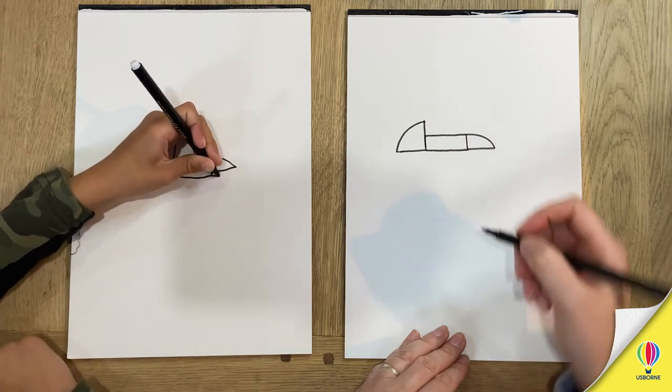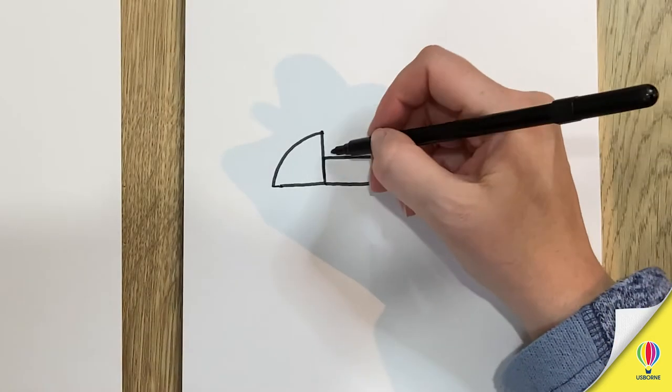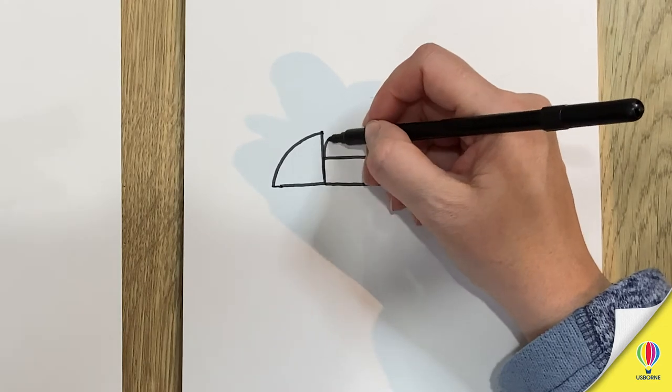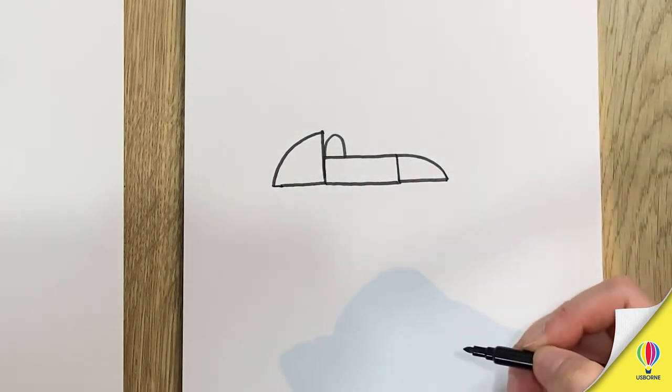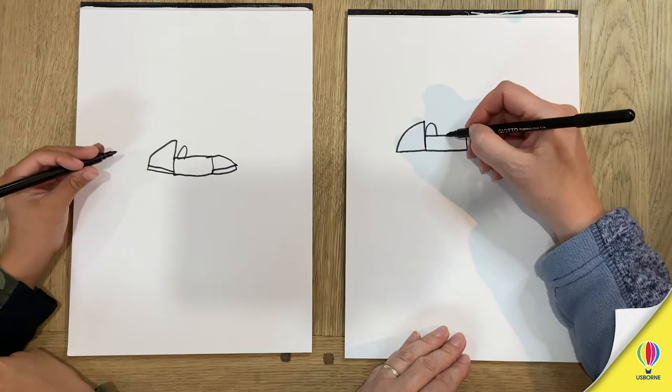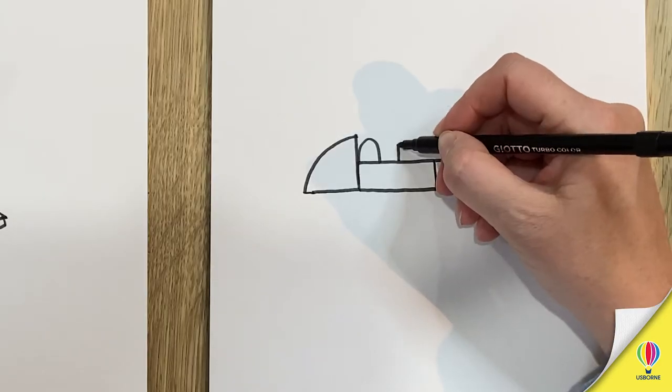Okay now we're going to draw the little man sitting in the car so we do a little curve like that. Mine's going to be hovering. Okay then a windscreen which is like a line up and then a curve down. Perfect.